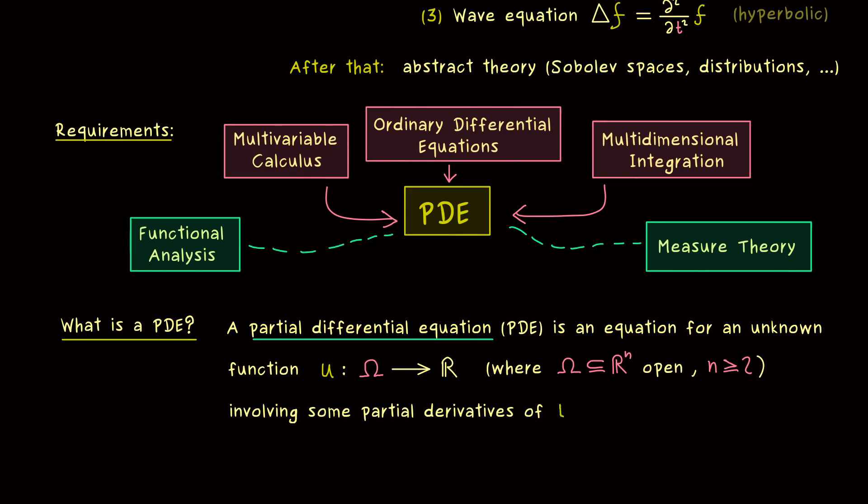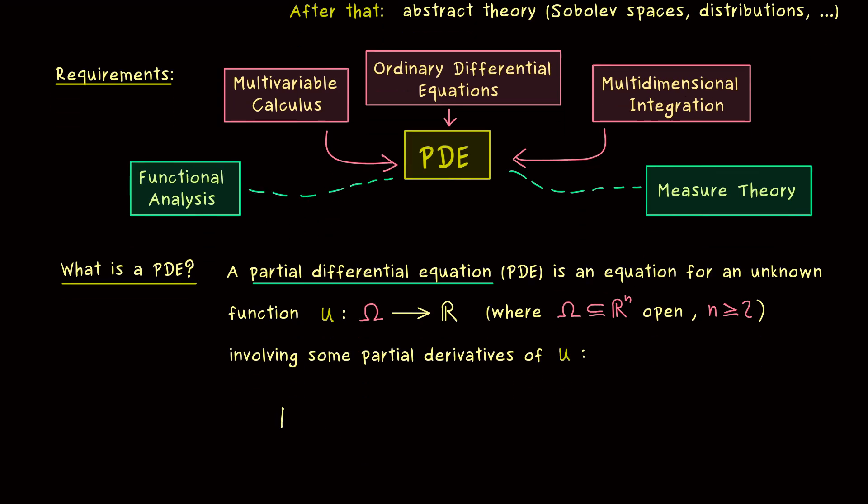Let's finish this definition, so we have an equation where partial derivatives of u are involved. So more formally we could write that we have a function capital F, and then the first input is a point x from omega, then the second input is our function u, and then all the other inputs are given by partial derivatives.